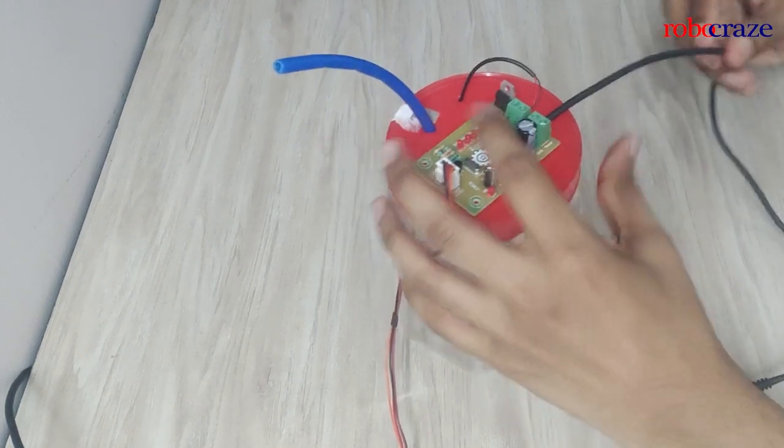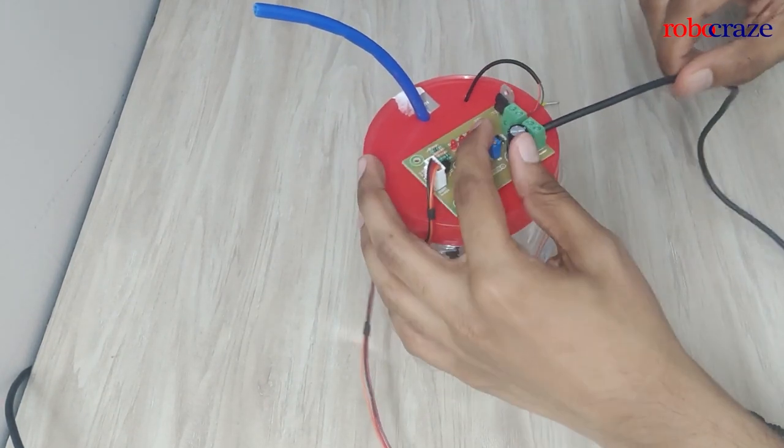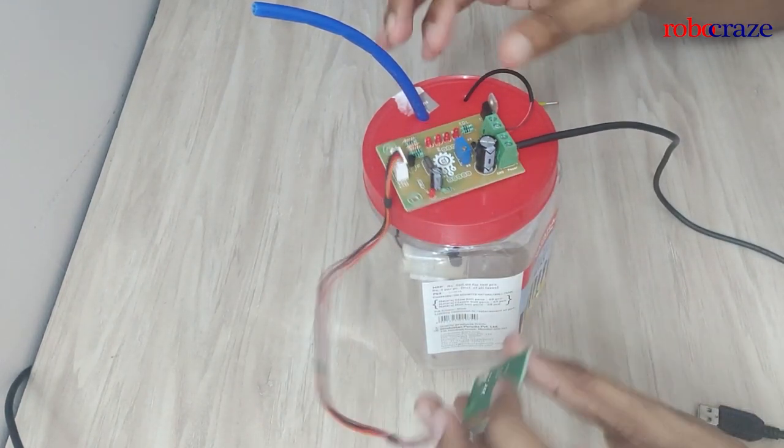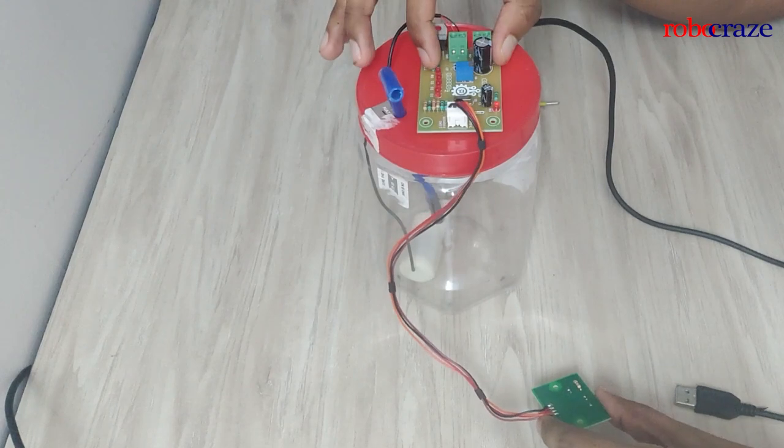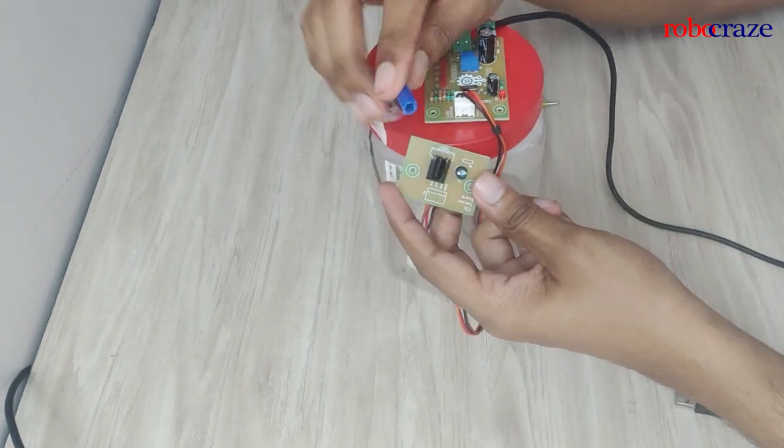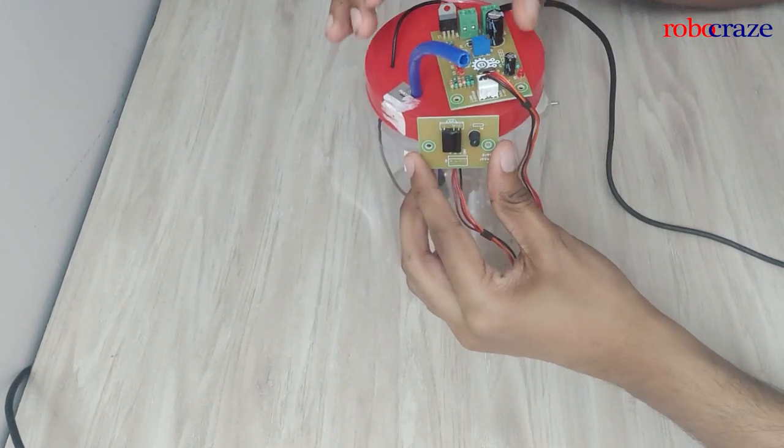Make sure it looks like it's secure. Both the wires, the input power wire and the output motor wires are secure. We secure the module onto the jar and we put the sensor in such a way that it faces the tube. So it detects the hand when the hand is close to the tube.